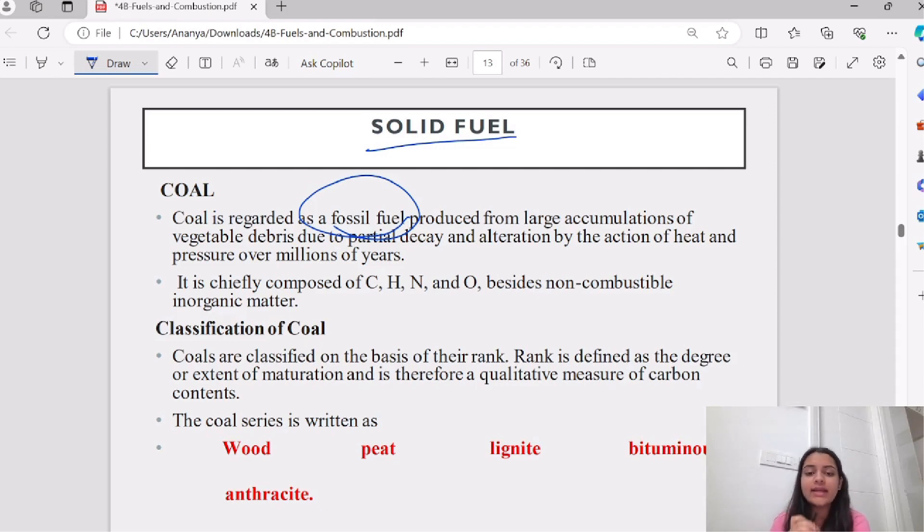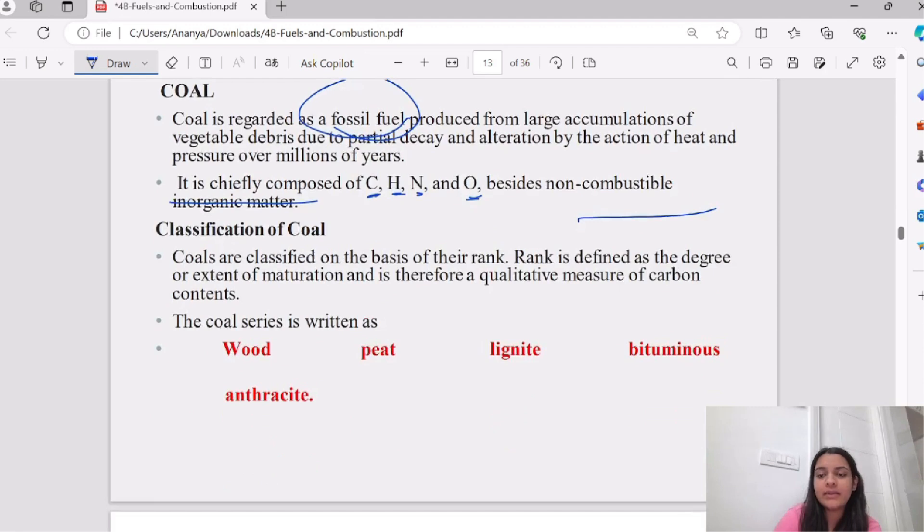Now, what does coal compose? Carbon, hydrogen, and oxygen. Besides, it has some non-combustible inorganic matter.